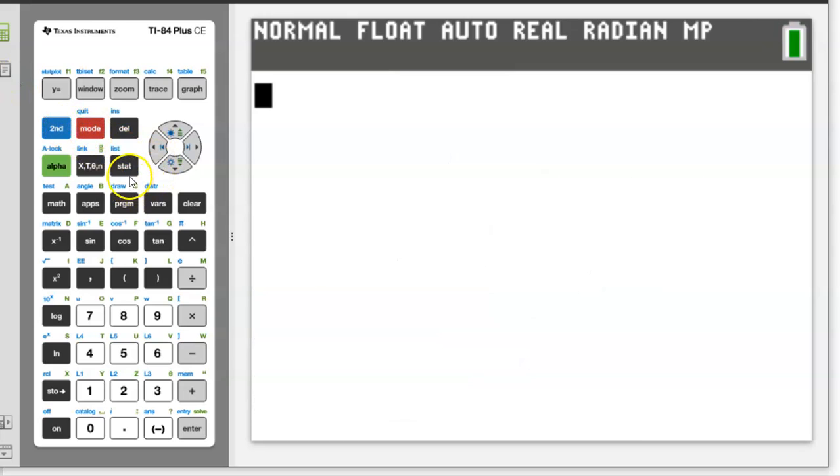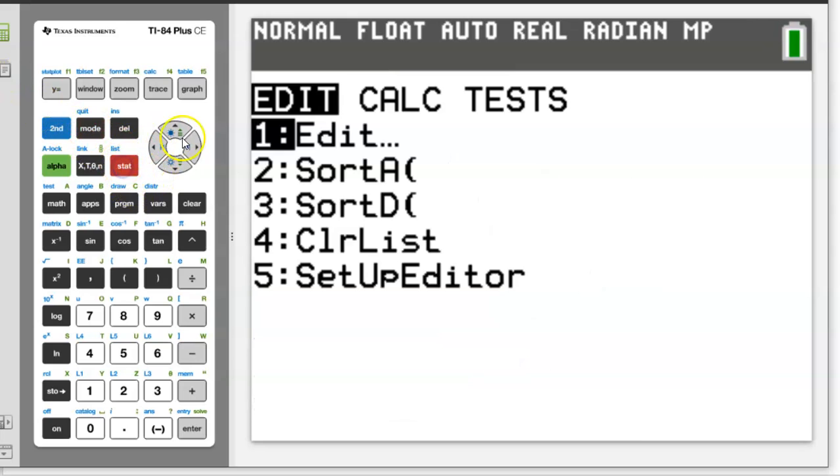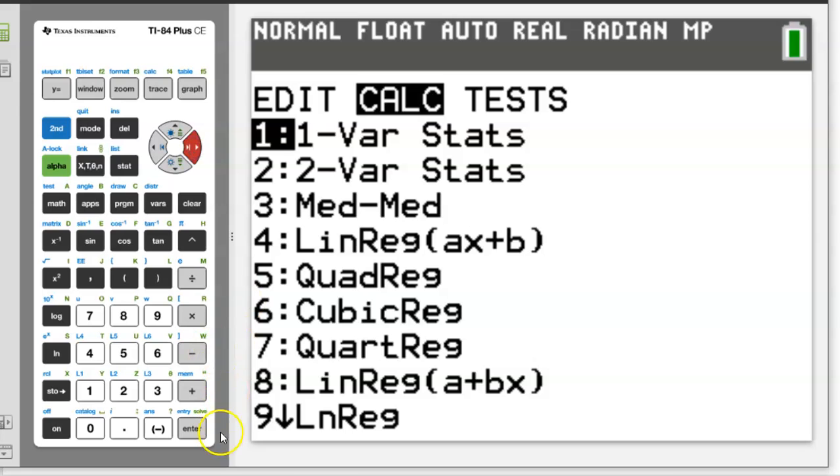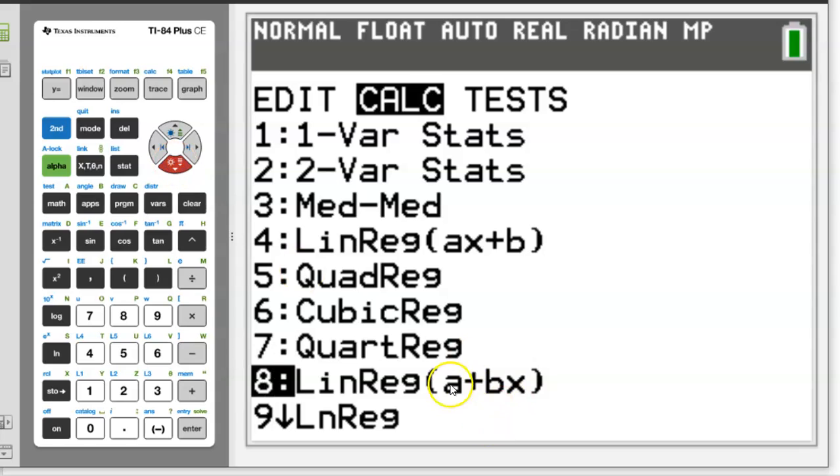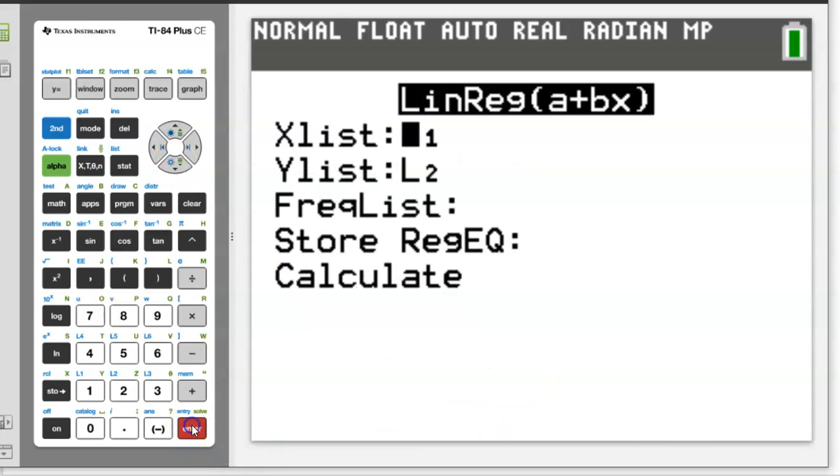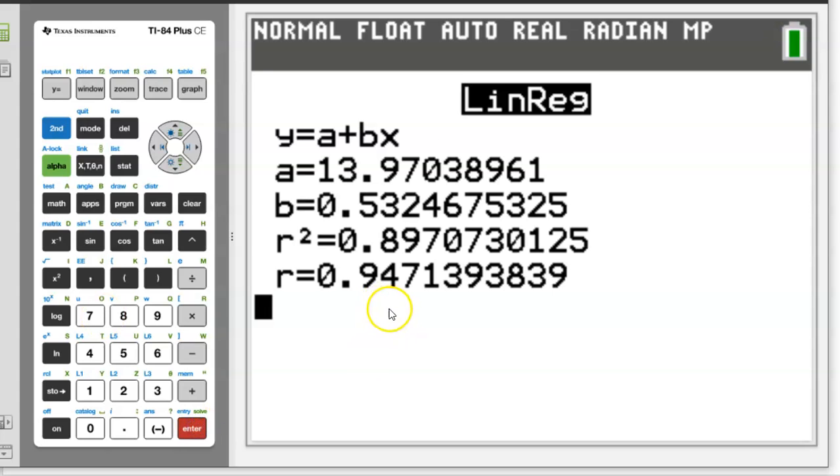So anyway, quit back. And again, let me just walk that real quick. Have your data entered in the calculator, slide over to calc, go down to number eight, linear regression, A plus BX. We'll talk a little bit more later in videos, why we're using that one, but that's what we want to do. Make sure you're choosing the correct list for your data. Hit calculate, there it is.